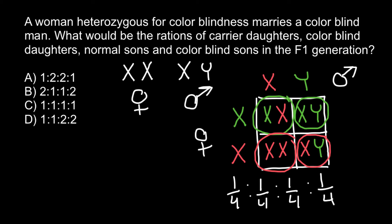The ratios would be one to one to one to one, and as you can see, the correct answer is answer C. This is a recessive genetic disorder, so the female who has one defective X chromosome would not express this disorder. She would not be affected because she has one normal allele on the other chromosome that balances this recessive allele.